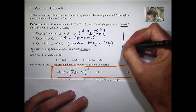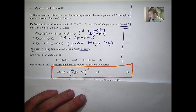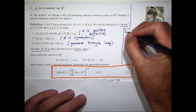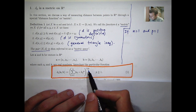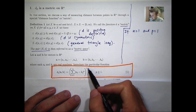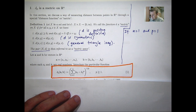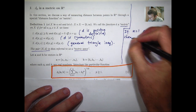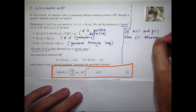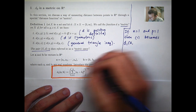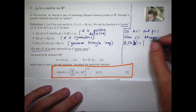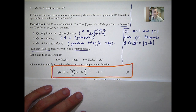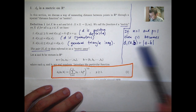Let's choose the simplest case: n equals 1 and p equals 1. If n equals 1 the summation sign disappears, and if p equals 1 the powers disappear — the vectors are just real numbers. So the expression becomes just the absolute value of the difference. We're working on the real line here, and this is a big simplification.